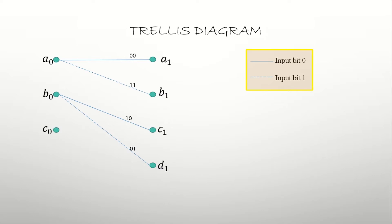Similarly, from state C it moves to A with a code of 11, and moves towards B if the input is 1 producing 00 as the coded sequence. From D it moves to C, and again moves to D if the input is 1. This is the basic trellis diagram and using this logic we decode the received sequence at the receiver side.